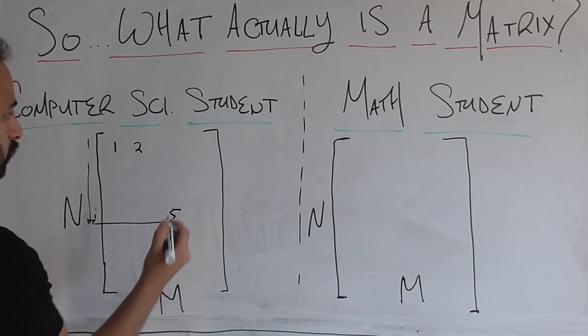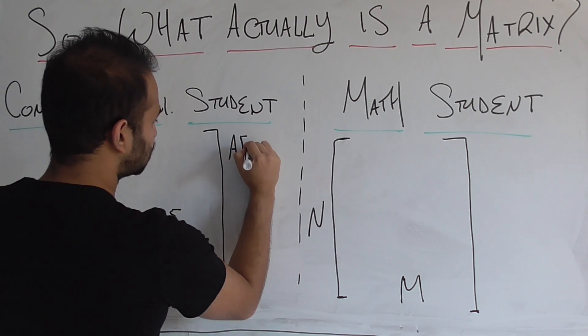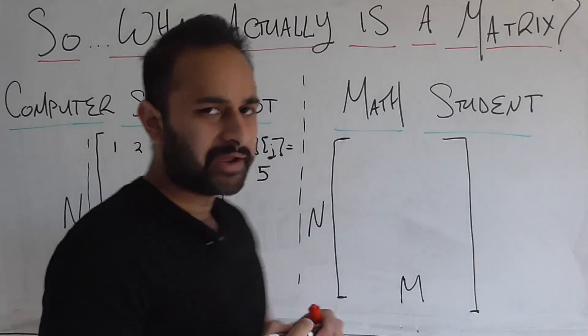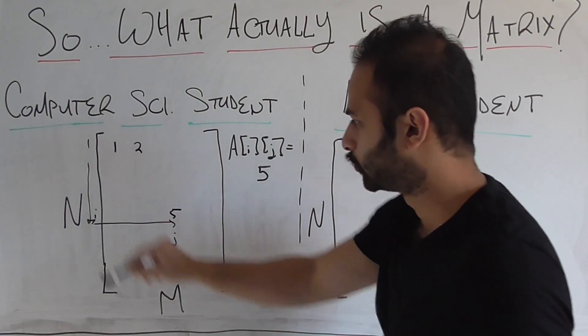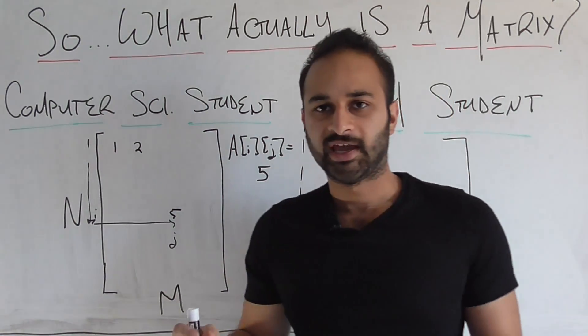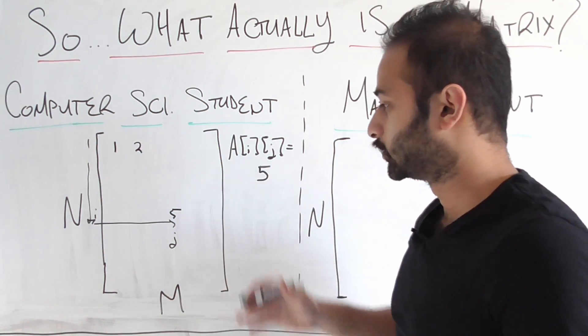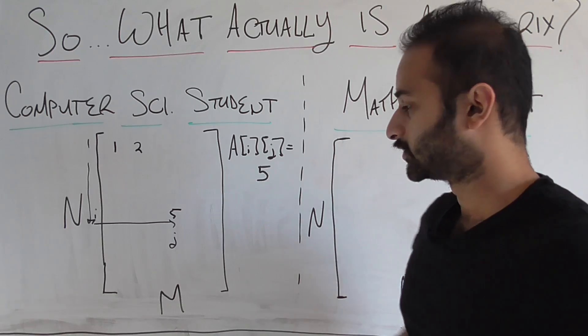So we would say that if this matrix was called A, and we want to index it, A_ij is equal to five. And that's mostly what a matrix is for a computer science student's perspective. It's a type of data structure that stores numbers or maybe strings or whatever inside of it. And we can index it like this.